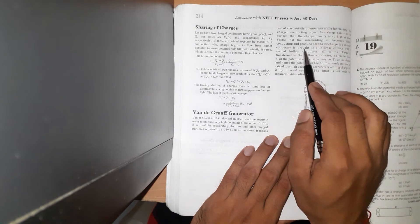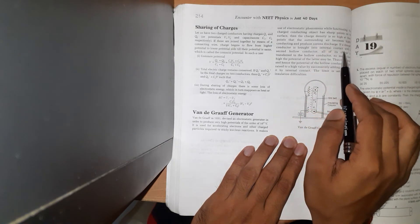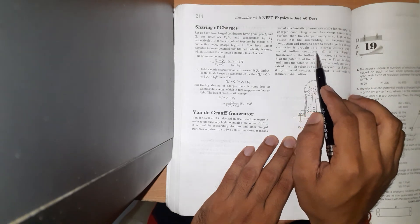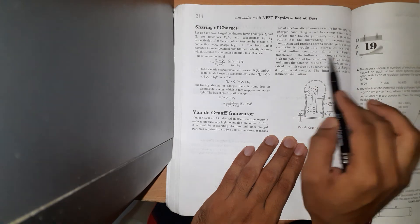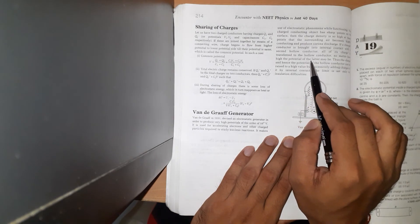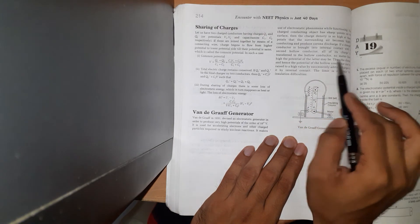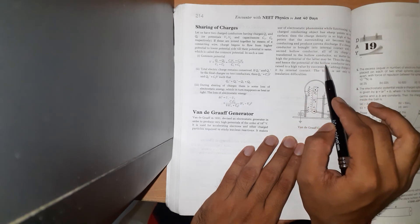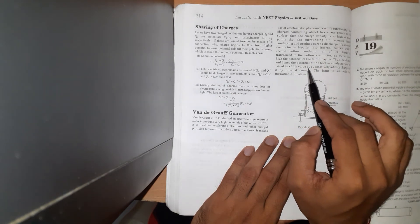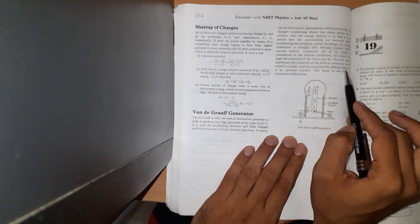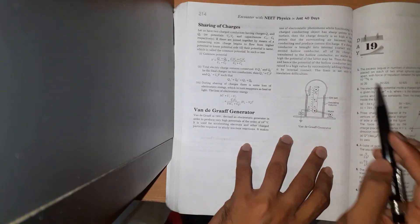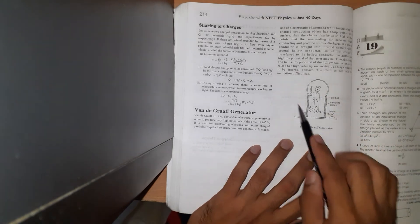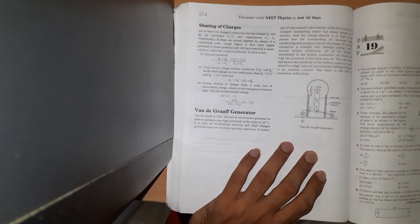If a charged conductor is brought into internal contact and charge is transferred to the hollow conductor, no matter how high the potential may be, the charge and potential of the hollow conductor can be raised by successfully adding charge through internal contact. The limit is set only by insulation breakdown.